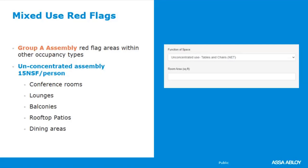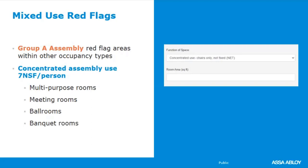Some areas in business occupancies could be red flags that might qualify as Group A assembly with more restrictive hardware requirements. For rooms with tables and chairs — conference rooms, lounges, balconies, rooftop patios, and dining areas — use the unconcentrated assembly calculator. If the occupant load is over 50 at 15 net square feet per person, it is assembly and you treat the hardware accordingly. For concentrated assembly like multipurpose rooms, meeting rooms, ballrooms, or banquet rooms where chairs only may be used, use the concentrated assembly calculator at seven net square feet per person.